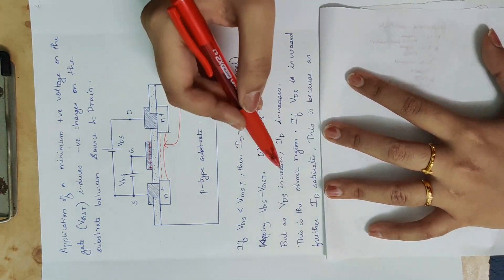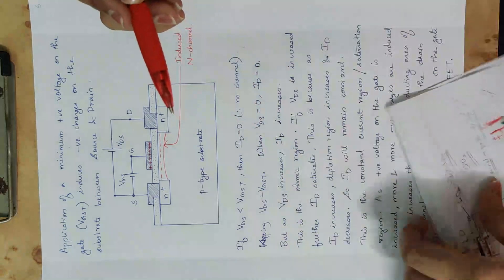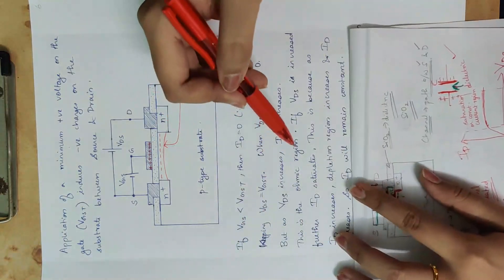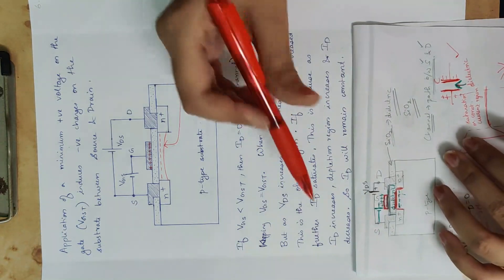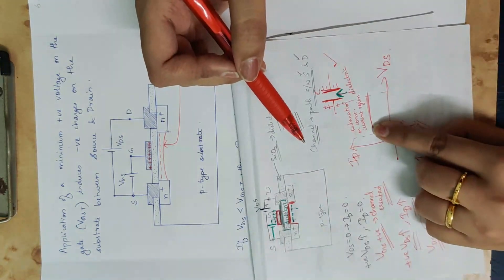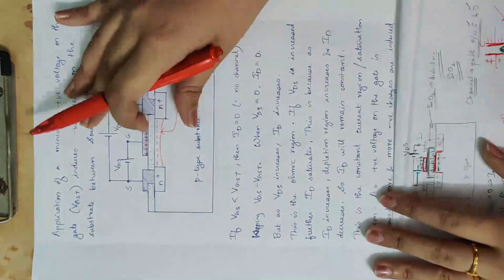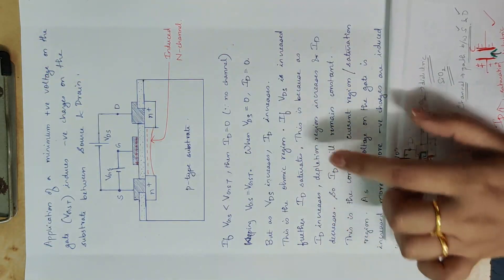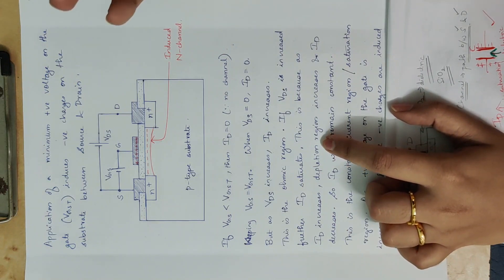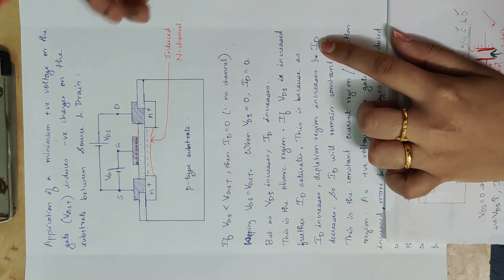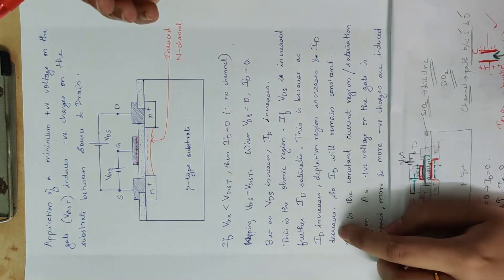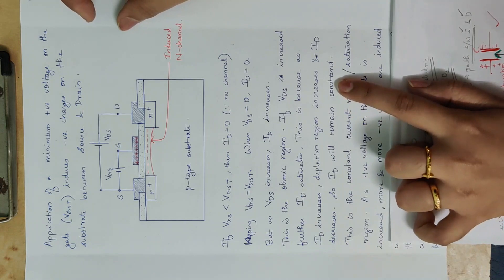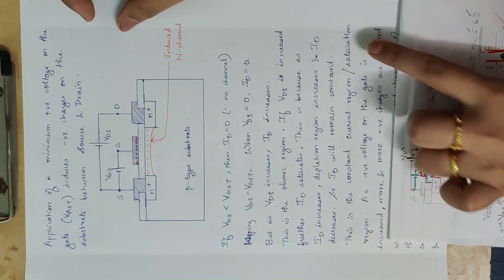If you want to increase this region, we enter the ohmic region where drain current increases linearly. If VDS is increased further, ID saturates — ID is not going to increase but remains constant. The depletion region increases. This constant current region is the saturation region, and ID will remain constant in this region.